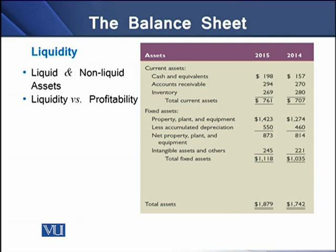The most non-liquid assets a firm may have are fixed assets, which may be property, plant, or equipment. A firm may also have intangible assets in its balance sheet as non-liquid assets. There is a difference between liquidity and profitability: if a firm accumulates its investment in liquid assets, it may not earn higher profit, as the rate of return on liquid assets is much lesser than the rate of return earned by fixed assets. So there is a trade-off between liquidity and profitability — if a firm wants to earn higher profit, the firm may lose liquidity, and vice versa.